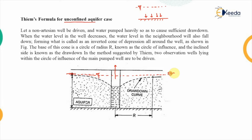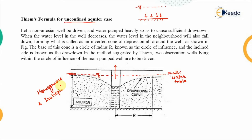As pumping is carried out, lowering of the water table takes place. If the aquifer is homogeneous — meaning the properties at all points within the aquifer are the same — it is called a homogeneous aquifer. If it is isotropic — meaning at a single point, all properties are the same in all directions — it is called isotropic. If these two conditions are satisfied,